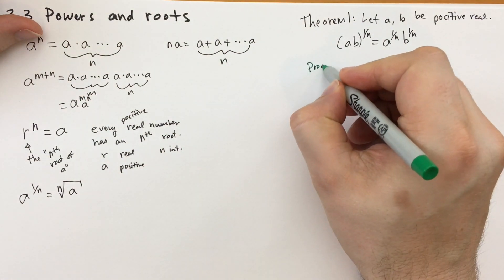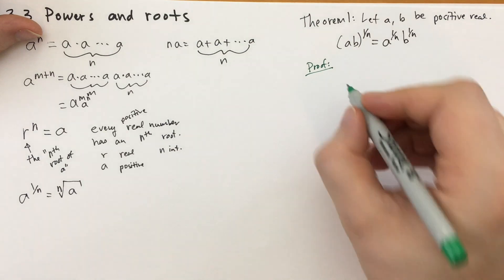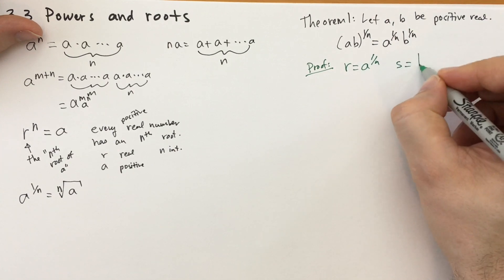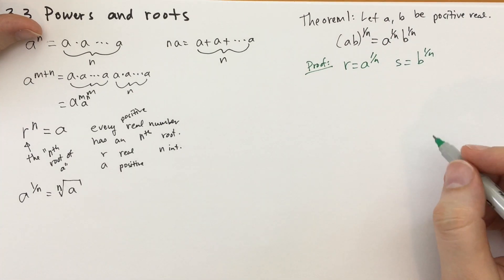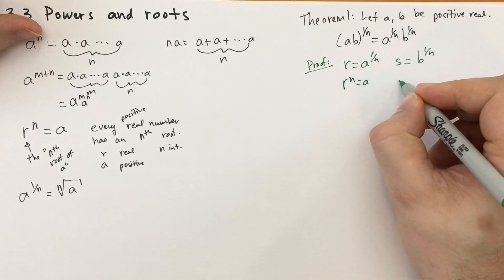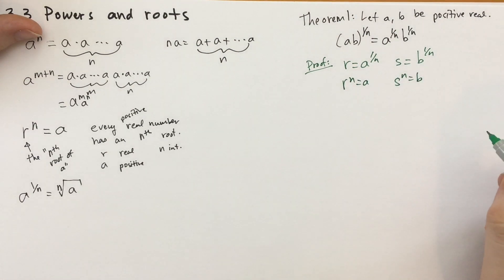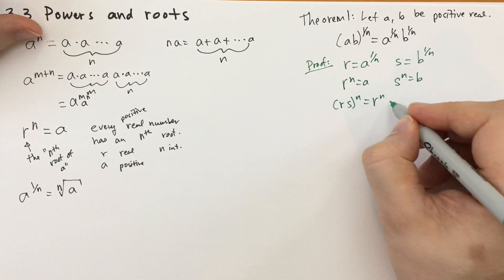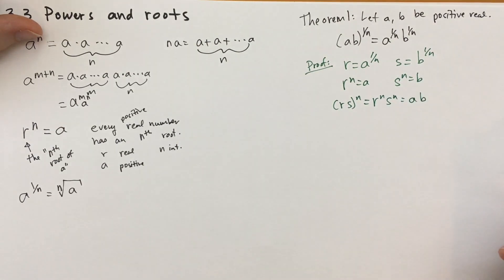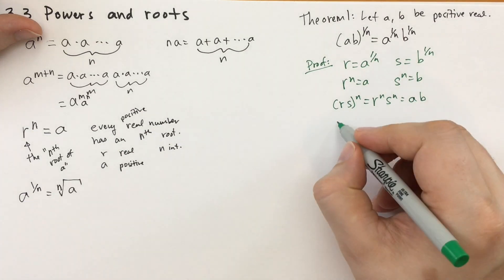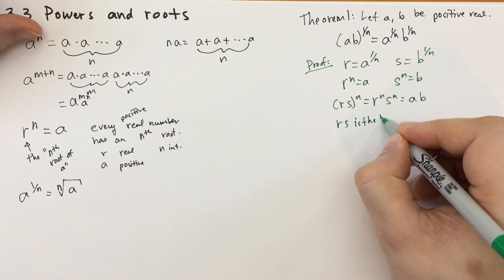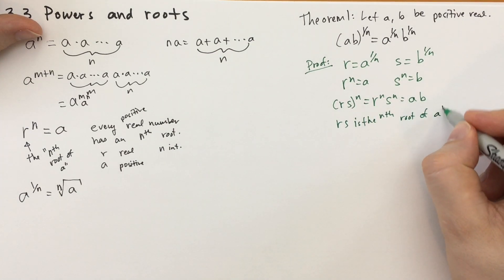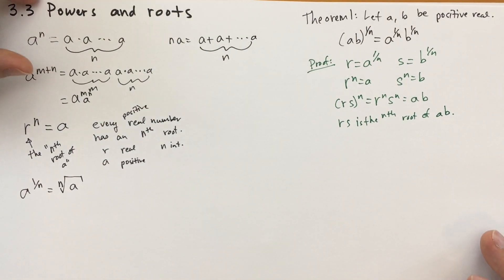For the proof, let r equal a to the one over n and s equal b to the one over n. This means r to the n equals a and s to the n equals b. Therefore (rs) to the nth power equals r to the n times s to the n, which equals ab. So rs is the nth root of ab. That's the proof.